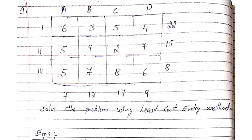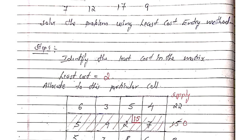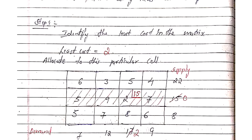Step 1: We have to identify the least cost in the entire matrix. Unlike row minima, column minima, or the northwest corner method, here we find the least cost across the whole matrix. Out of all the numbers, the least cost is 2. Let us identify the cell which has that least cost — this particular cell has a cost of 2.